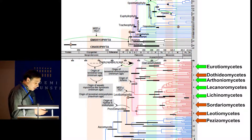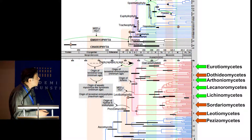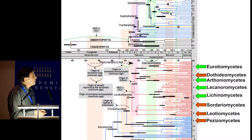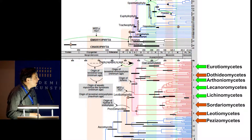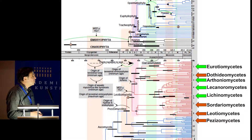Let's look at those classes. We have the Eurotiomycetes — mostly non-lichenized, though some lichens exist in this class. Then we have three classes that are mostly lichen-forming fungi, and three other classes where, as far as we know, we have never found any lichen-forming fungi.